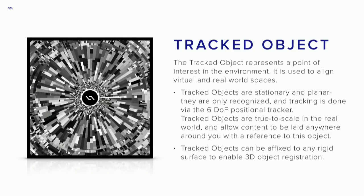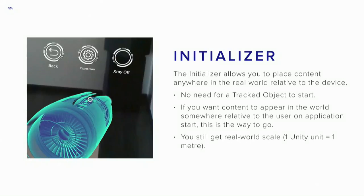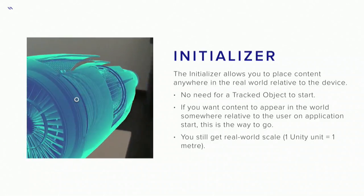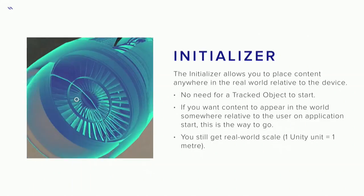The tracked object is used to align content. Generally this is going to be a two-dimensional, flat and rigid object. If you want to augment something 3D — like a burner or a large piece of equipment — you can place one of these nearby, look at it, and then we're able to localize the content. Our six-degree positional tracker will then track how I move through space to display the content relative to where it needs to be. And again, all of this is true to scale — one Unity unit equals one meter — which makes it really easy to align content.